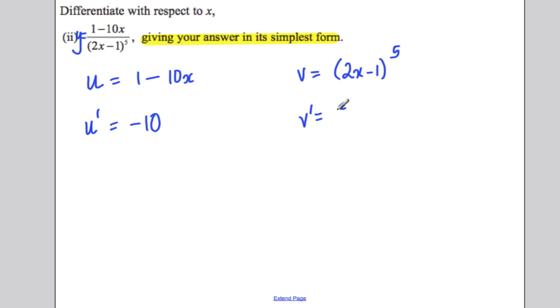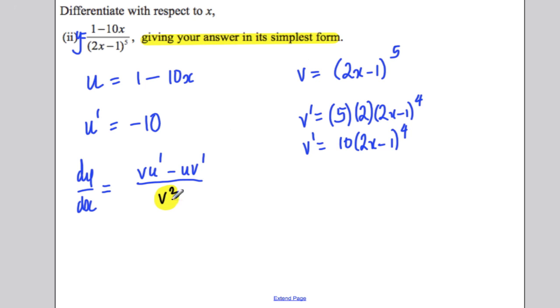V dash: this is the chain rule. Bring down the 5, differentiate inside the brackets, keep the brackets as they were, and reduce the power by 1. So v dash is 10(2x - 1) to the power of 4. Now state the rule you're using. The quotient rule. Many people wrongly stated the quotient rule. It's in the formula booklet. It's vu' minus uv' all over v squared. The number of people that forgot the v squared were staggering. Use the formula booklet and write down the formula so you don't make a mistake.